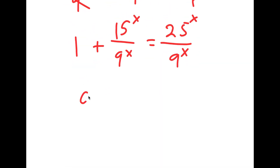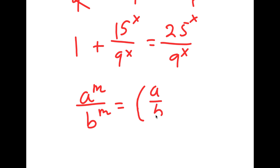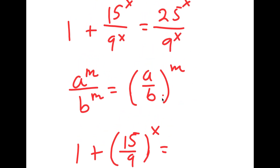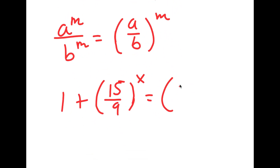If I have something in the form a to the power of m over b to the power of m, this is the same thing as a over b to the power of m. So 15 to the power of x over 9 to the power of x equals 15 over 9 to the power of x, and 25 to the power of x over 9 to the power of x equals 25 over 9 to the power of x.